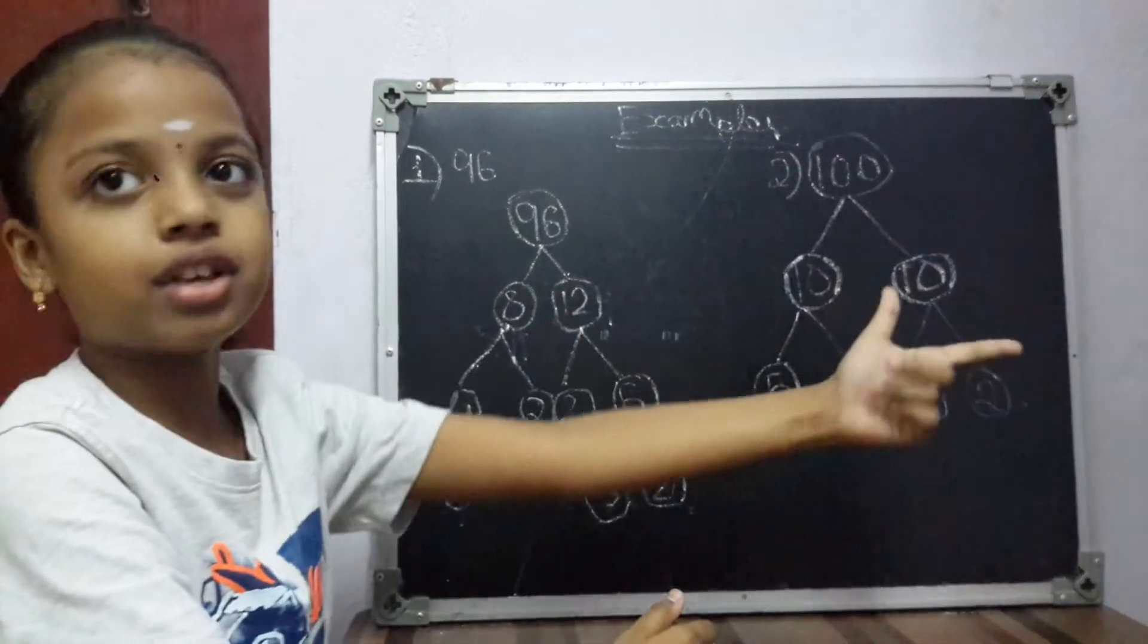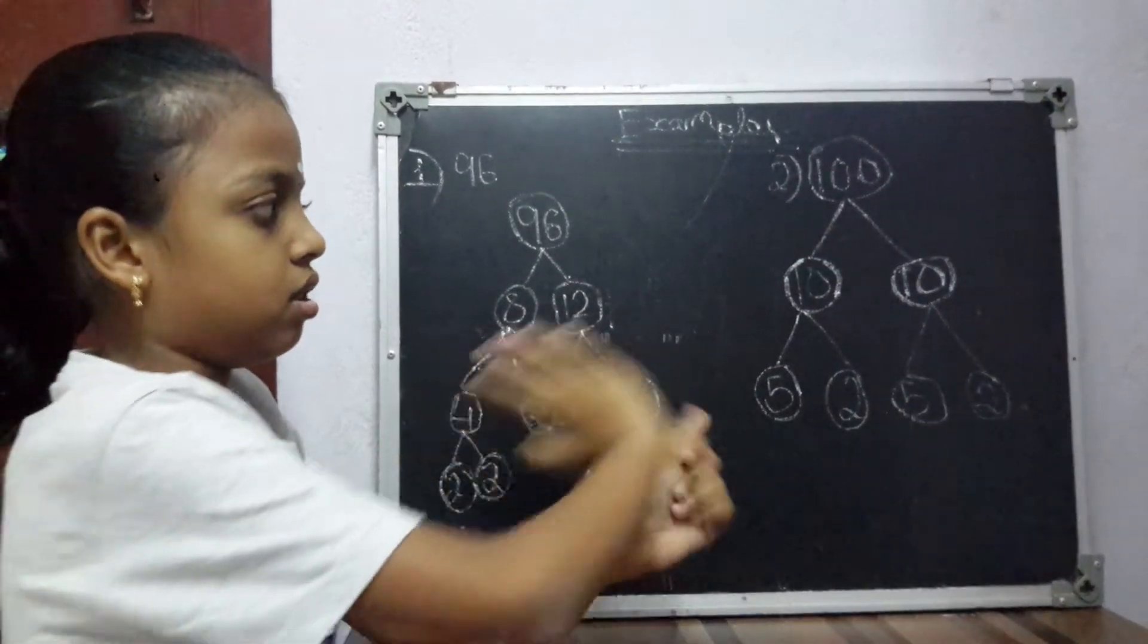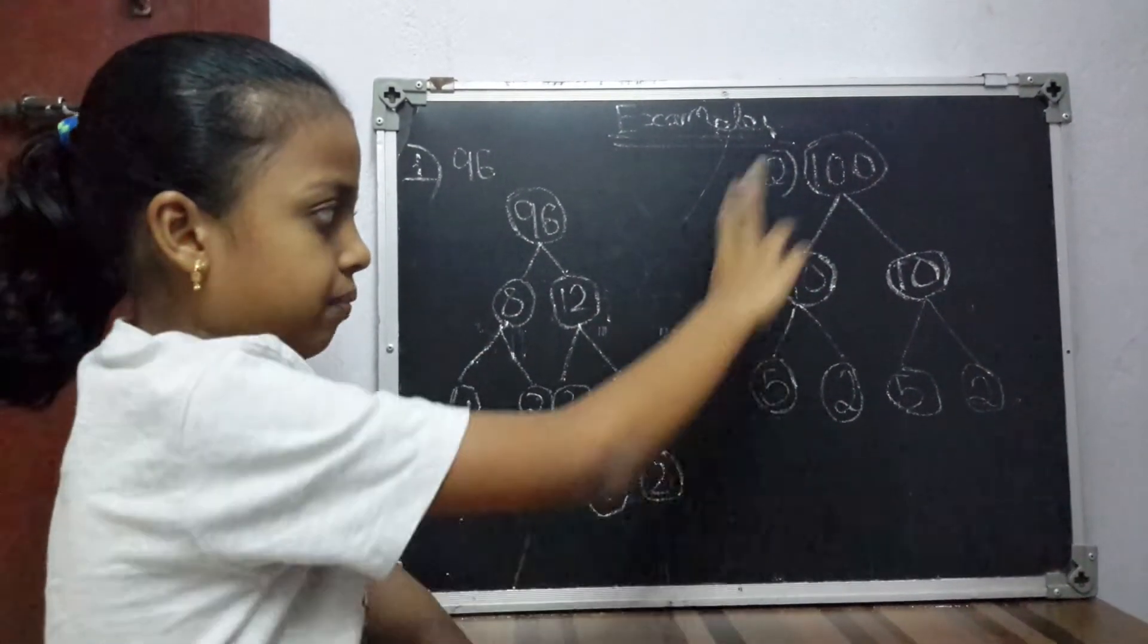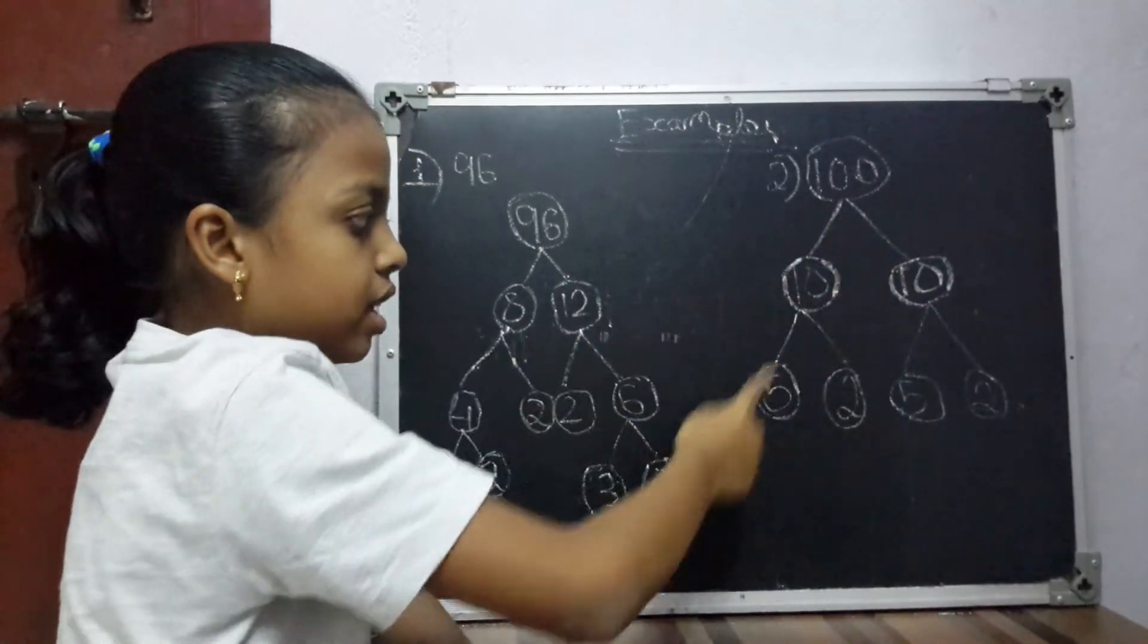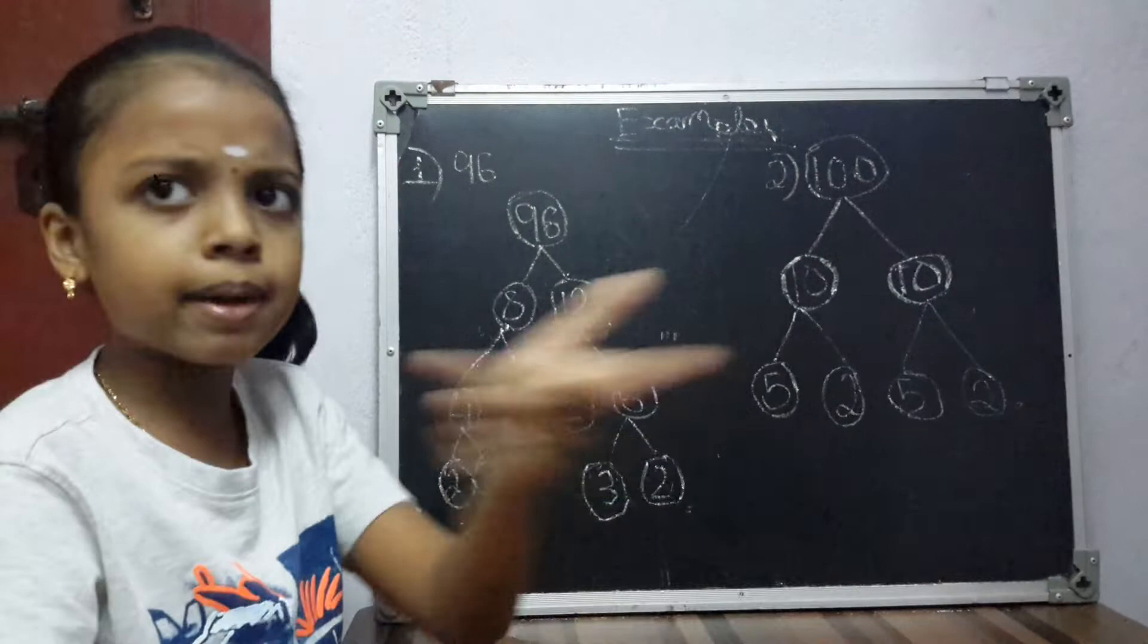Now the second example: 100. You can write 50 like that we can write, but I have wrote like this itself. 10 tens are 100. 5 twos are 10 and 5 twos are 10.